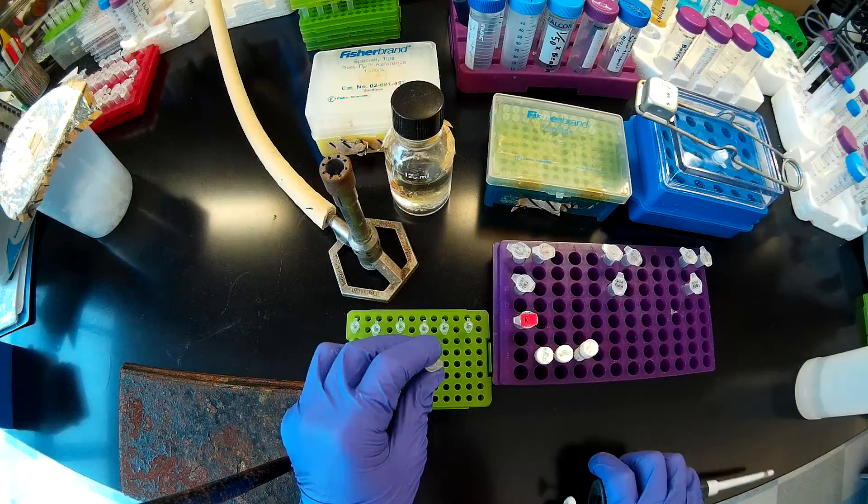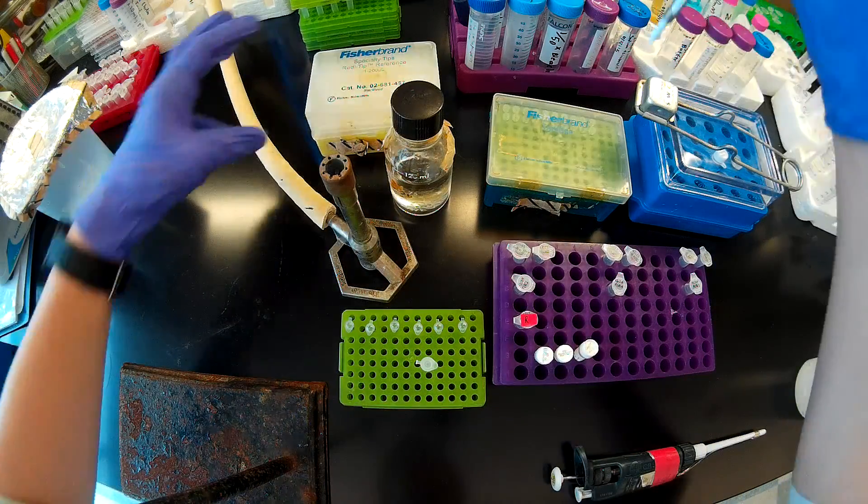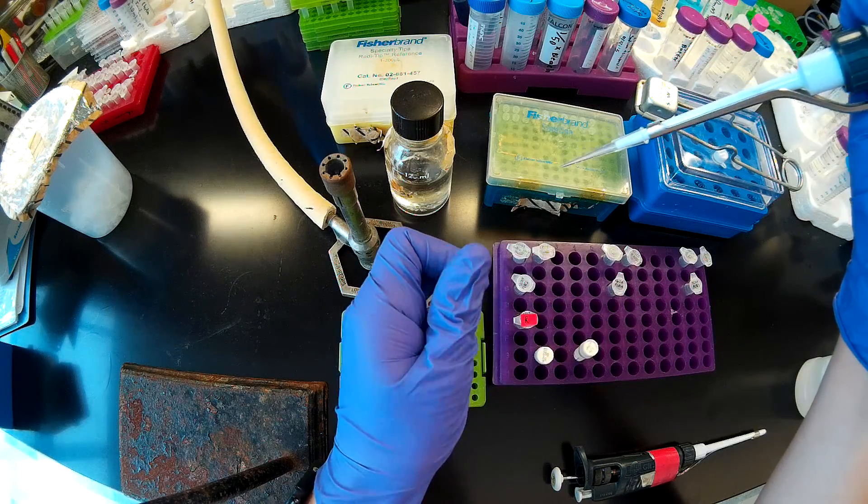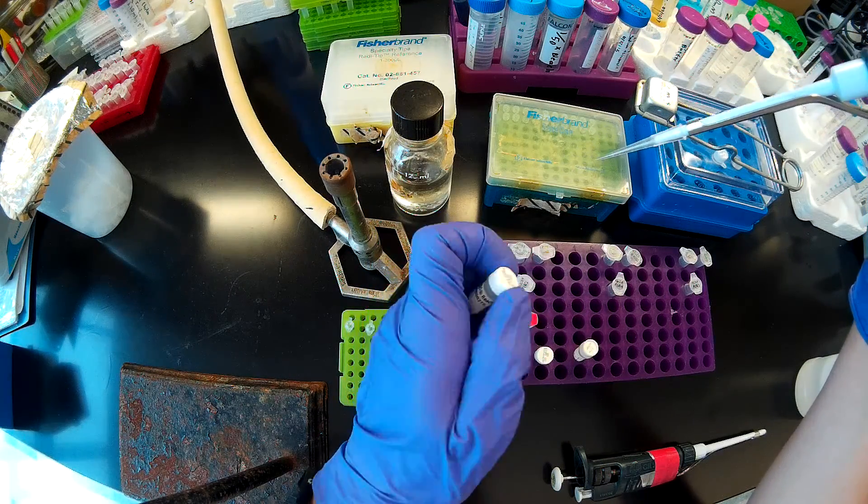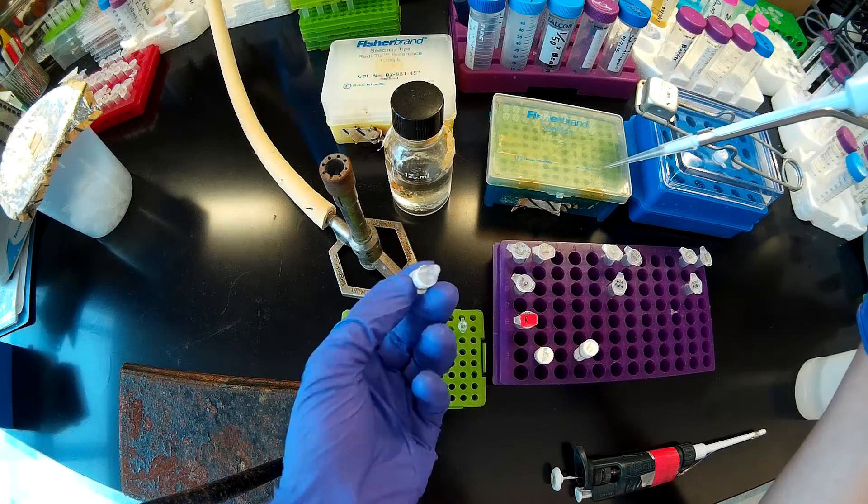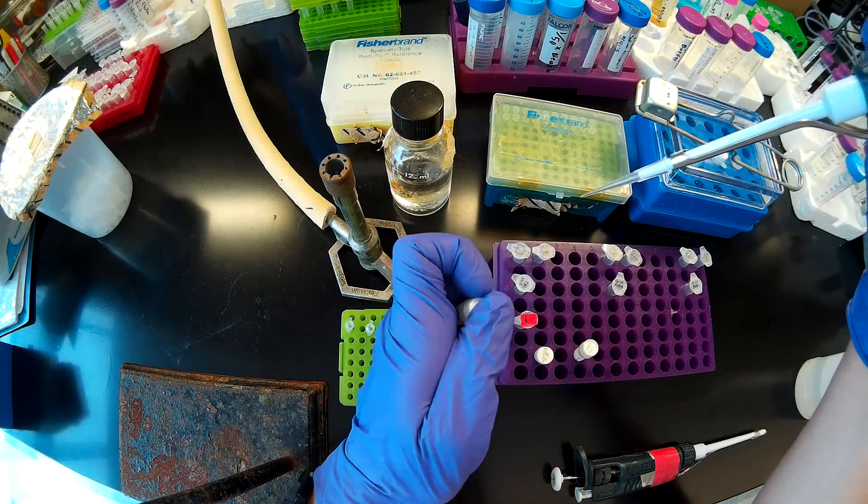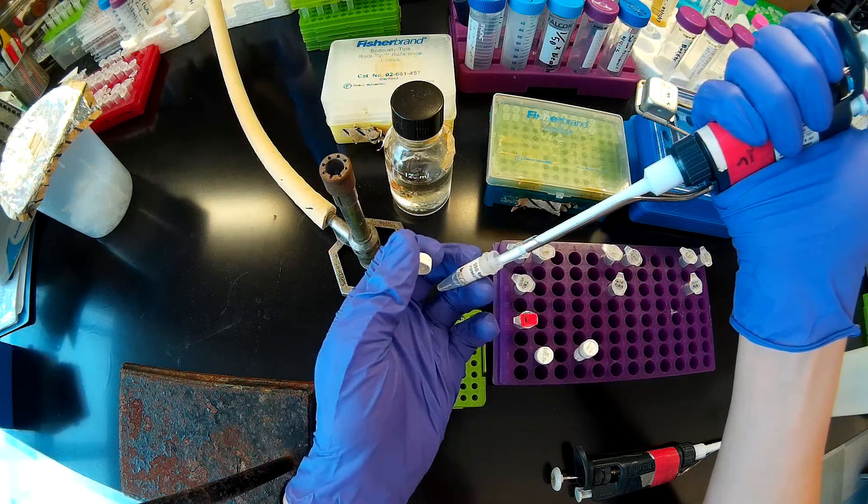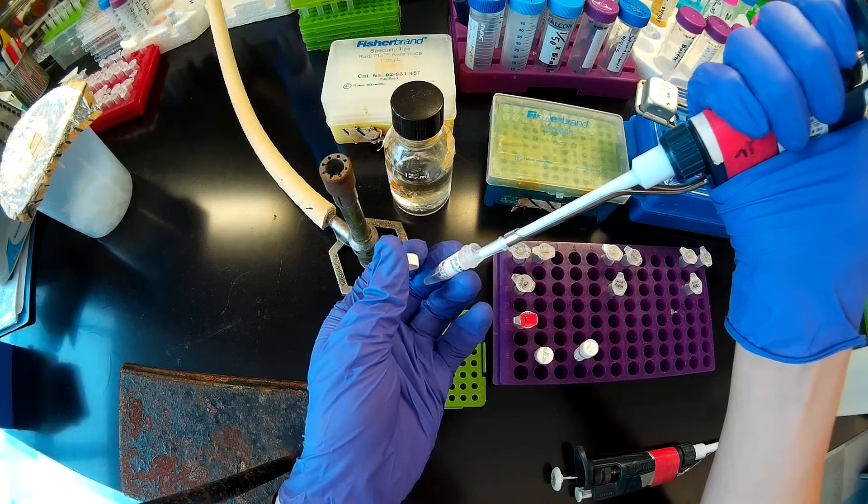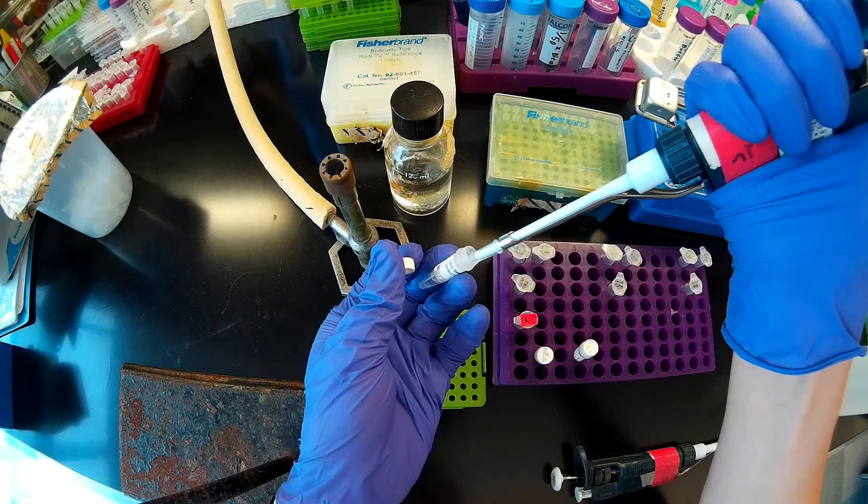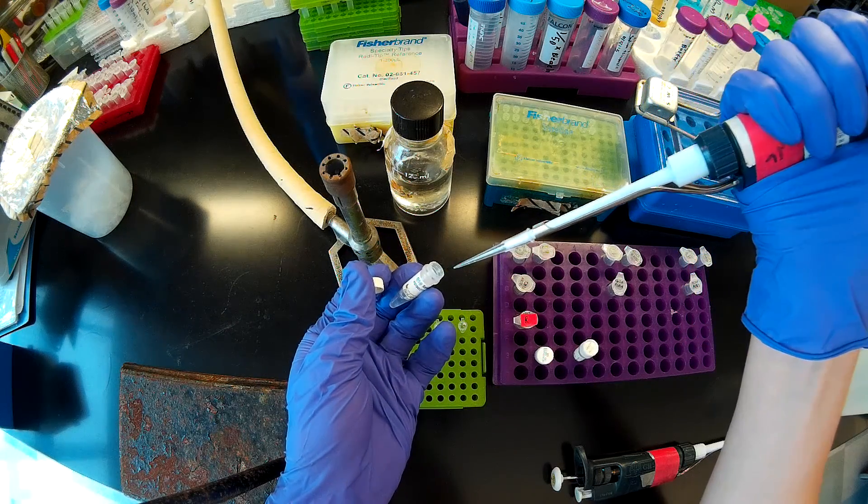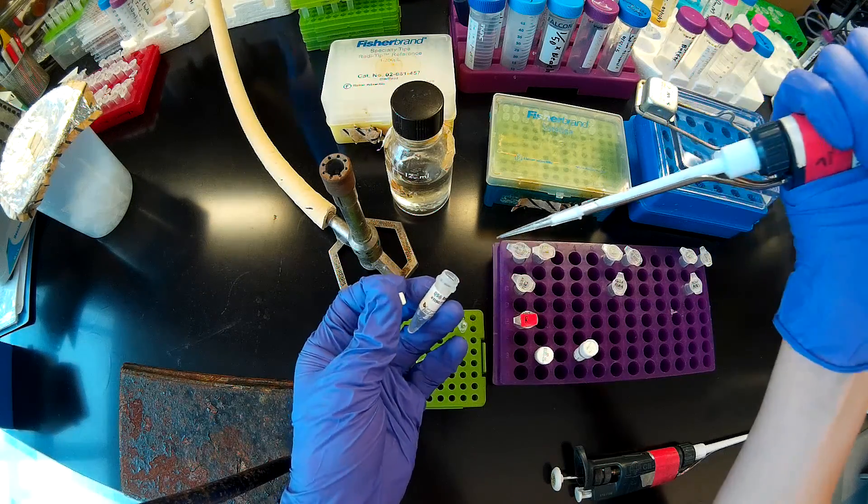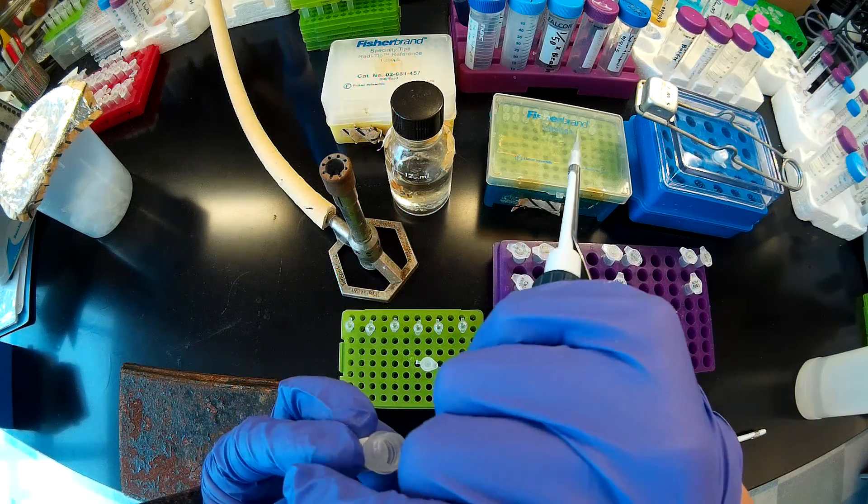I'm going to take 62.5 microliters of this Q5 reaction buffer. It's really important to make sure that this is well mixed after you pull it out of the freezer. The Q5 reaction buffer, some of the salts tend to precipitate out upon freezing. So I already vortexed it, but I'm going to pipet up and down a couple times just to make sure that's properly mixed. Now I'm taking 62 microliters of that.